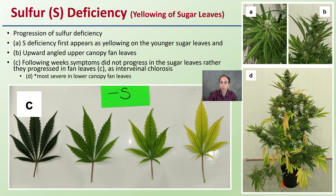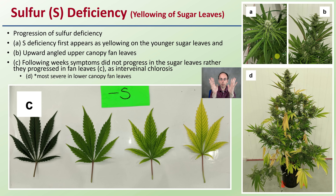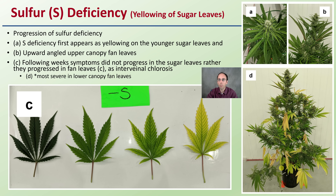Sulfur deficiency appears as yellowing of the sugar leaves and first shows up in the younger sugar leaves, then progresses upward through the canopy fan leaves. The following week, symptoms progressed in the fan leaves as interveinal chlorosis — not to be confused with magnesium deficiency. The most severe symptoms appear in the lower canopy fan leaves. It presents as a very bright yellow coloration, and it first appears in those upper sugar leaves, so timing is important in catching it early.